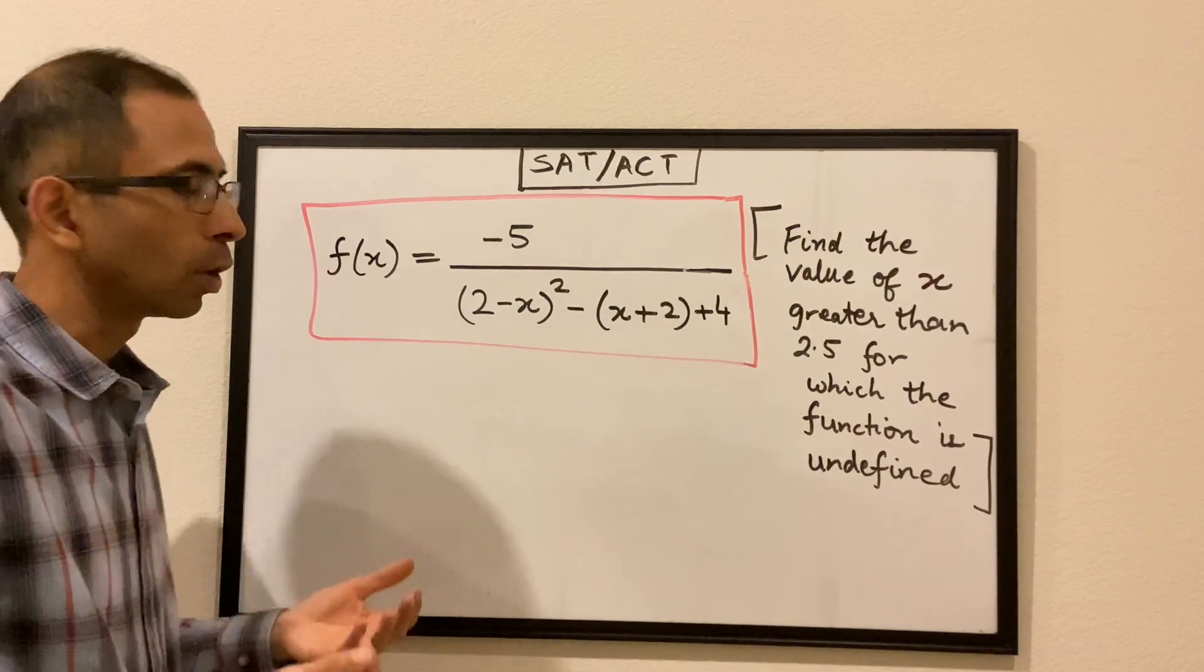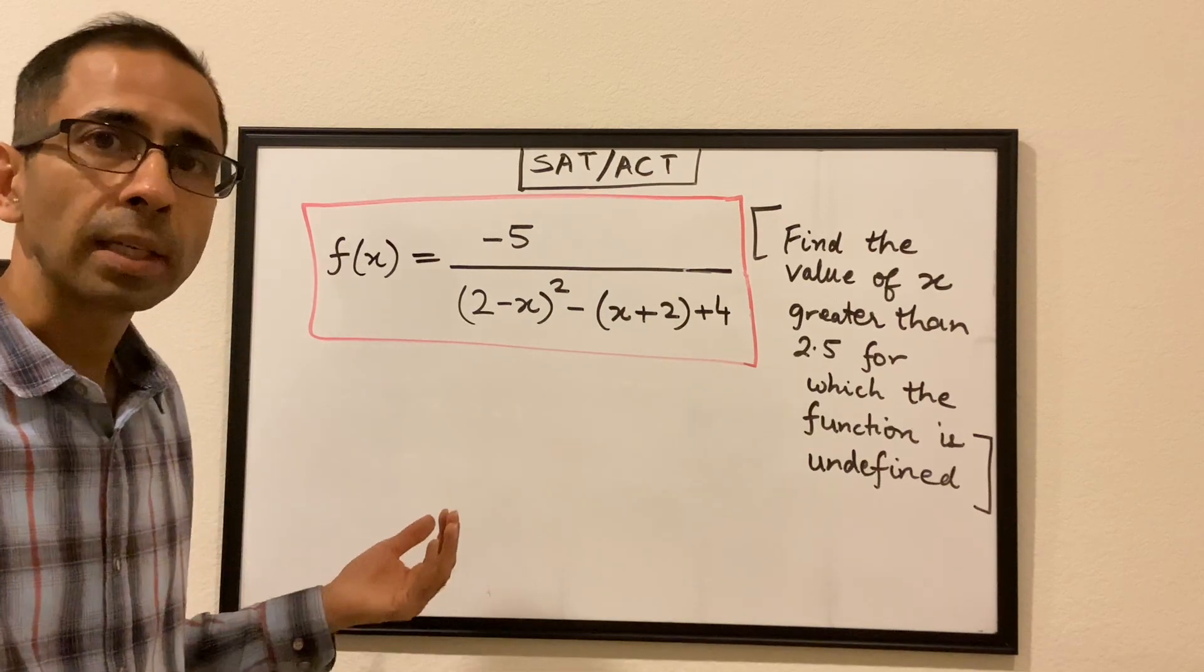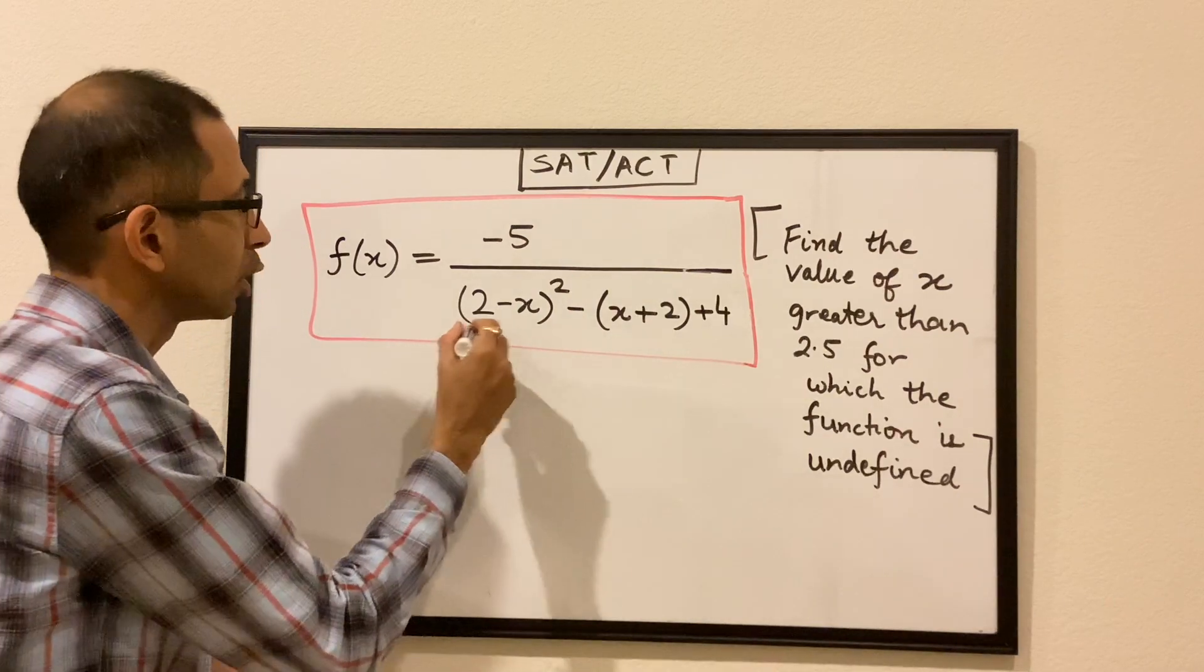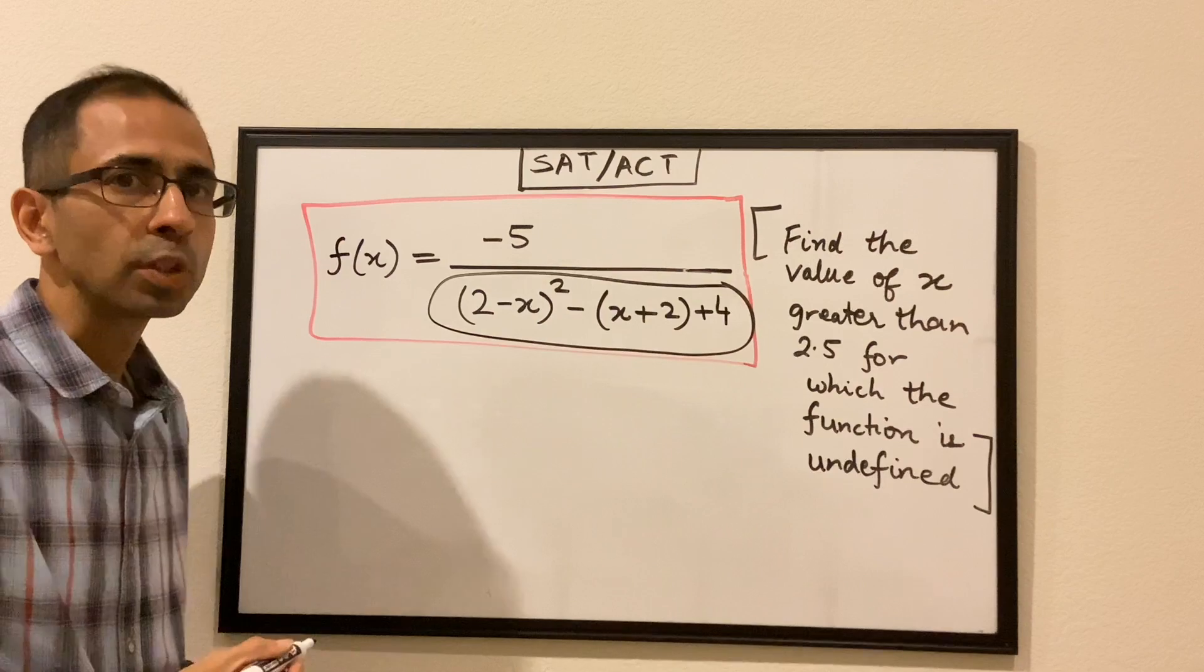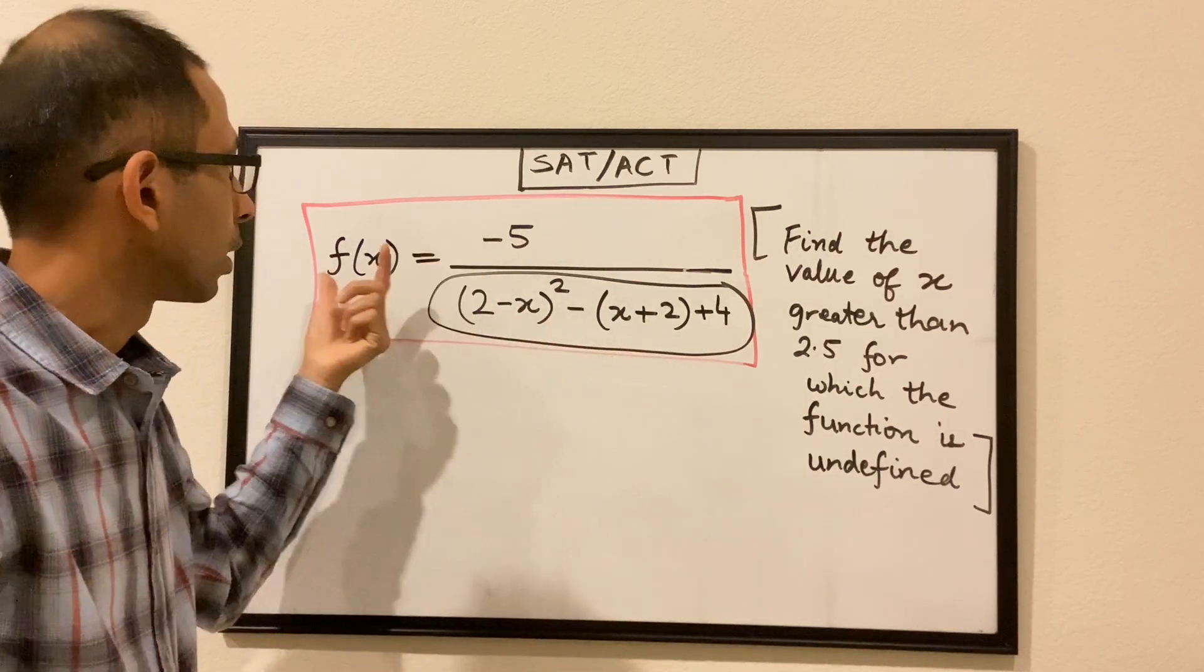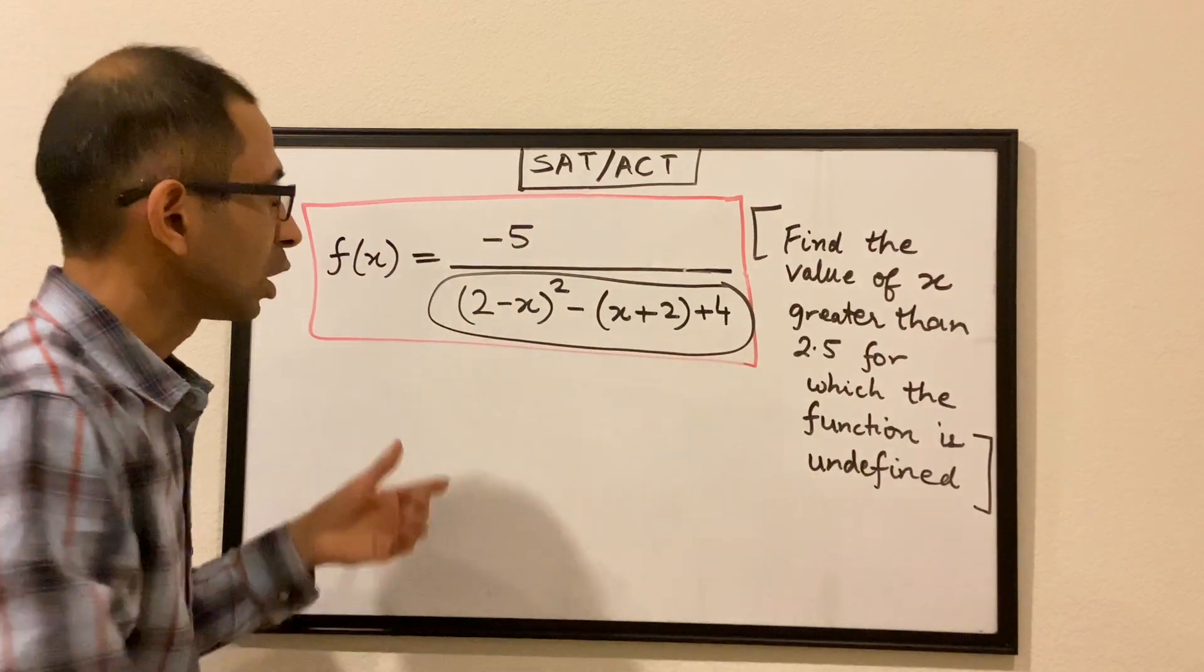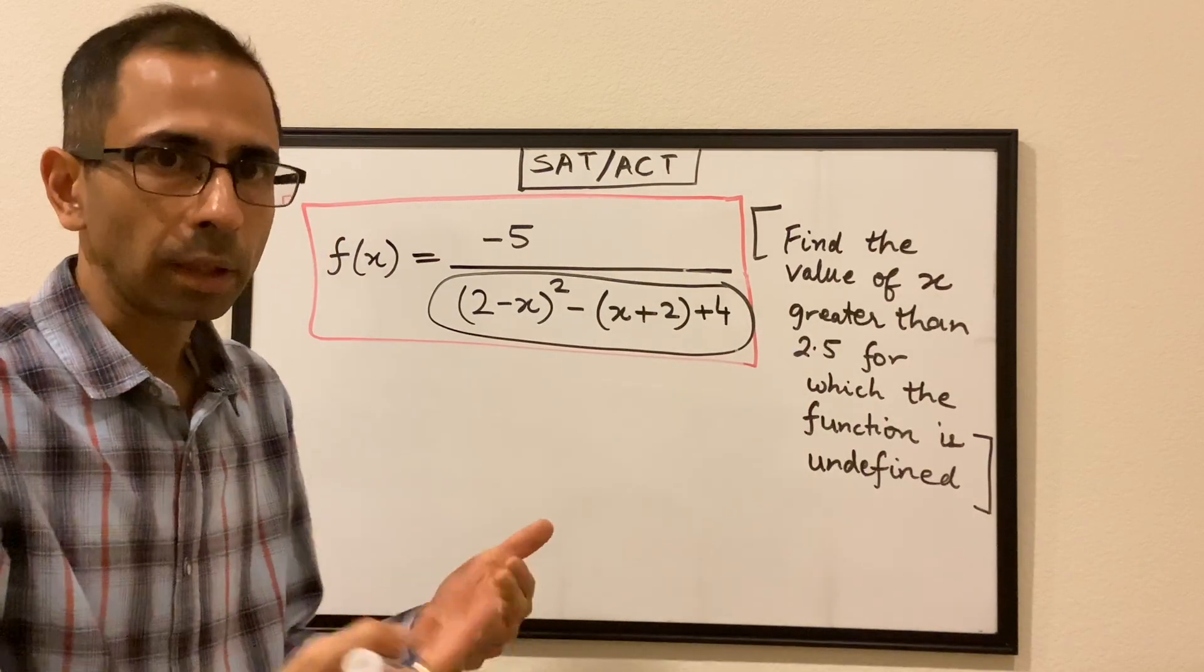Now we all know that anything divided by 0 is undefined. So essentially what the question is asking is what are those values of x which make this denominator 0, right? Because once the denominator becomes 0, the function will become minus 5 over 0 which is undefined. So essentially we have to put the denominator equal to 0 and solve that quadratic.